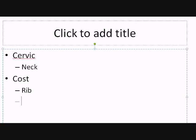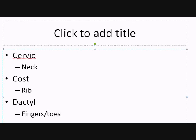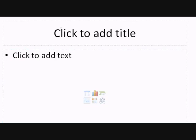'Cost' refers to the ribs — we've talked about that already. One term we haven't discussed yet: 'dactyl,' which refers to the fingers or the toes. So for example, dactylitis would be inflammation of the fingers or the toes. That's an interesting one.